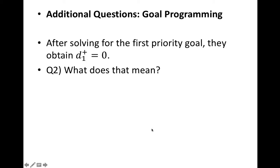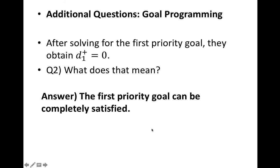After solving the first priority goal, let's say you have d_1^+ equal to 0. What does that mean? This means that the first priority goal can be completely satisfied. So your feasible solution satisfies your first priority goal.